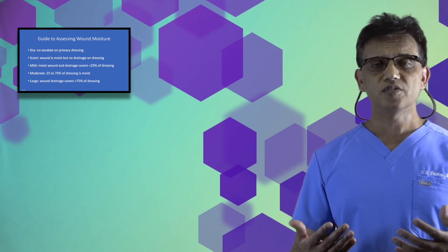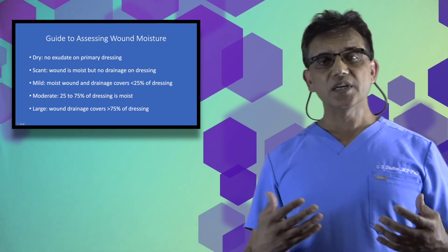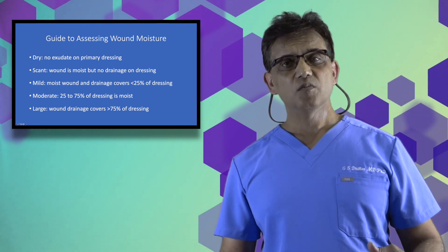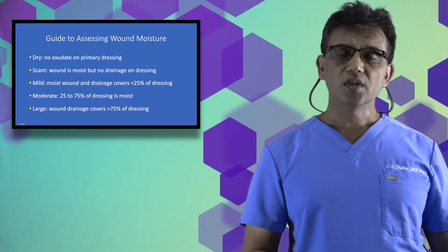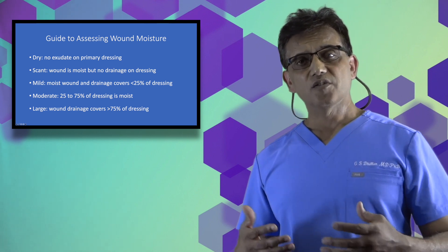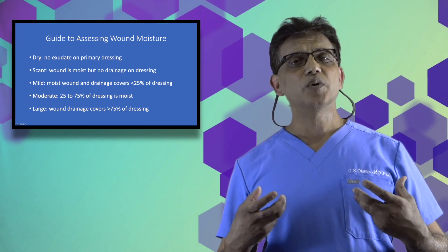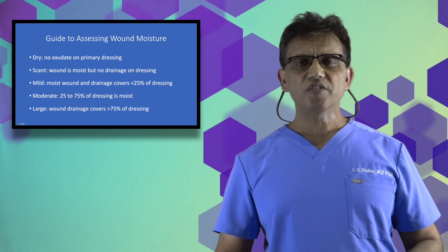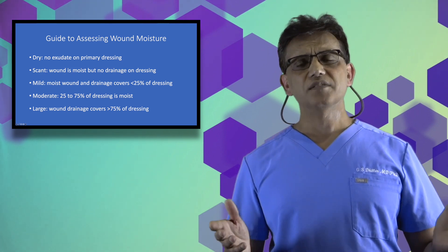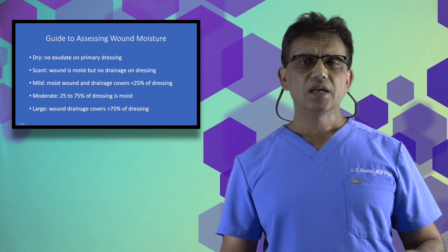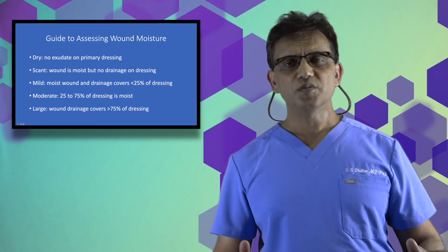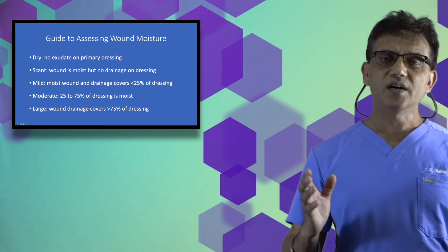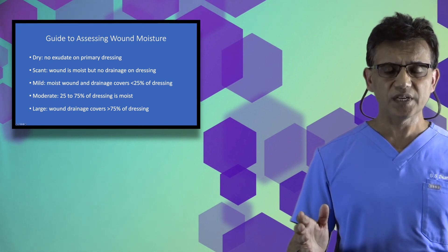Another way to assess moisture is to look at the drainage on the dressing removed. There may be scant drainage on the dressing, but the wound may still be moist. Mild drainage when there's about 25% of the dressing saturated. Moderate drainage 25% to about 50% to 75%. And large amount of drainage when the entire dressing is saturated with exudate.